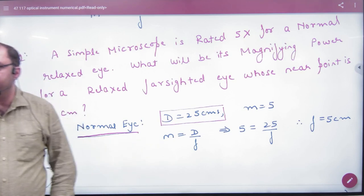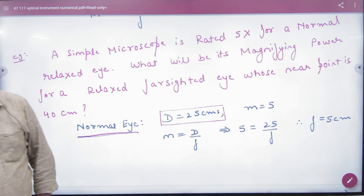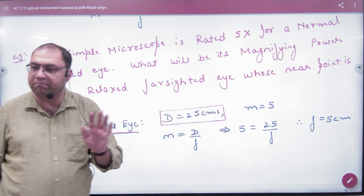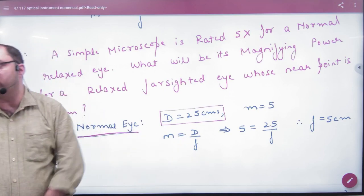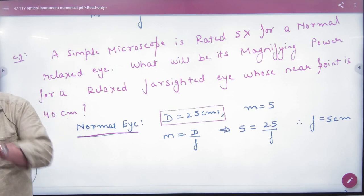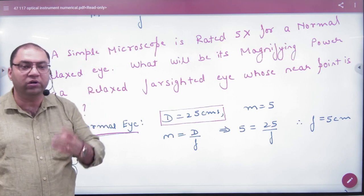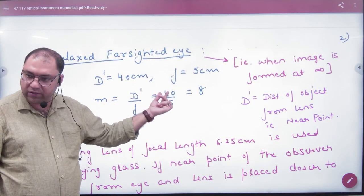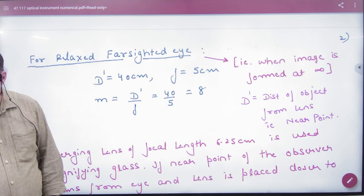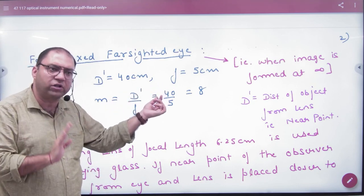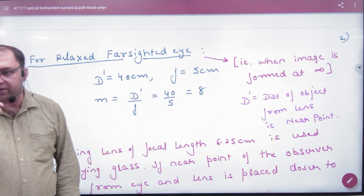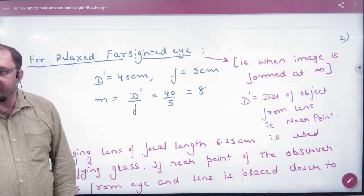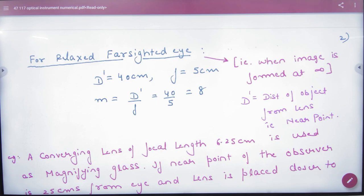For the relaxed eye, the formula is D by F — not 1 plus D by F. In the first case, the normal eye has D equals 25 cm and magnification equals 5. From this, we can calculate the focal length. Then in the second case, for the defective eye with D equals 40, we substitute the focal length we found into the formula to get the magnification. So this question has two parts: first find focal length from the normal eye case, then find magnification for the defective eye.